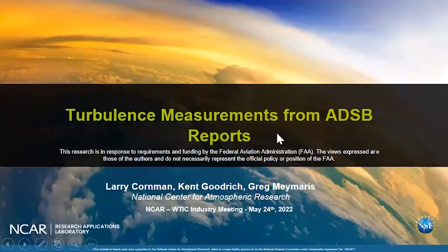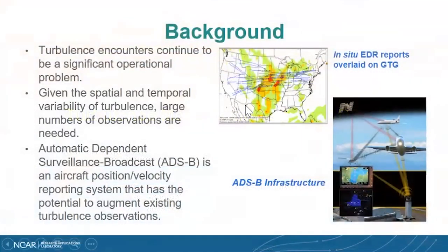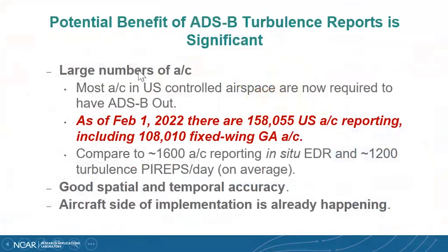Moving on to the ADS-B work — this presentation is from Larry Kornman; I'm just standing in. Turbulence encounters continue to be a significant operational problem. Given that turbulence is so variable spatially and temporally, we really need large numbers of observations. ADS-B is an aircraft position and velocity reporting system that has the potential to really augment existing turbulence observations.